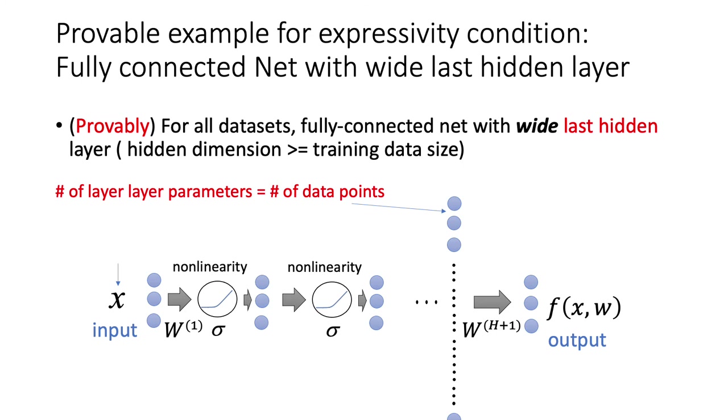And what are the examples of expressivity condition? Our first example that we are able to prove is a fully connected net with a wide last hidden layer. So mathematically, we are able to show that for all datasets,